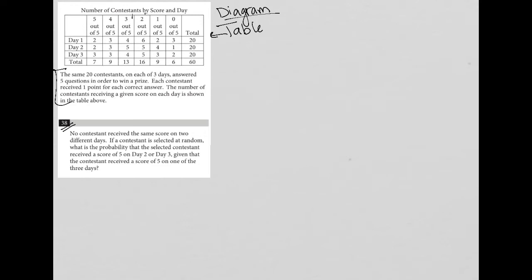So, question 38 says no contestant received the same score on two different days. If a contestant is selected at random, what is the probability that the selected contestant received a score of 5 on day 2 or day 3, given that the contestant received a score of 5 on one of the three days? So, this question is a probability question.